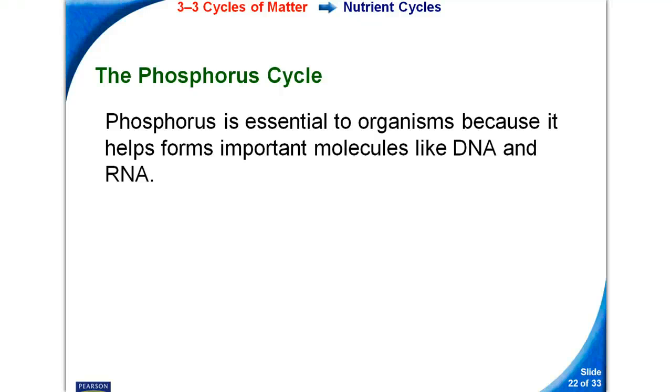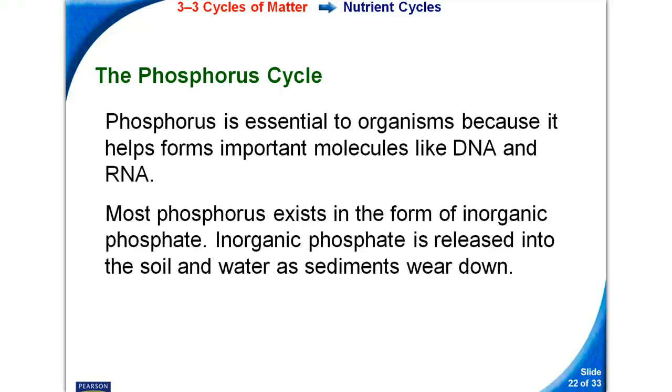The phosphorus cycle. Phosphorus is essential to organisms because it helps form important molecules like DNA and RNA. Most phosphorus exists in the form of inorganic phosphate. Inorganic phosphate is released into the soil and water as sediments wear down.